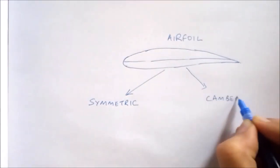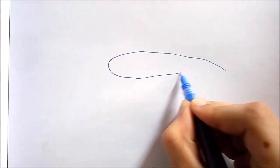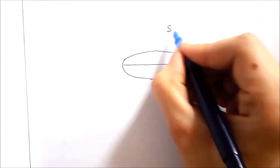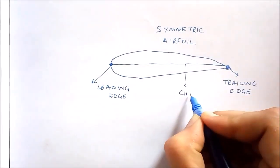In the symmetric airfoil, as the name suggests, the upper and lower surfaces are totally symmetrical about the chord line, which is a straight line joining the leading edge and trailing edge. And the mean camber line, a line which separates the airfoil into two equal halves, is essentially the same as chord line.